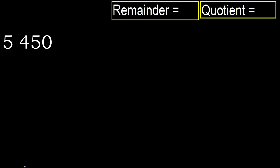450 divided by 5. 4 is less, therefore next. 45 is not less, therefore with 45. 5 multiplied by which number is nearest to 45, but not greater.